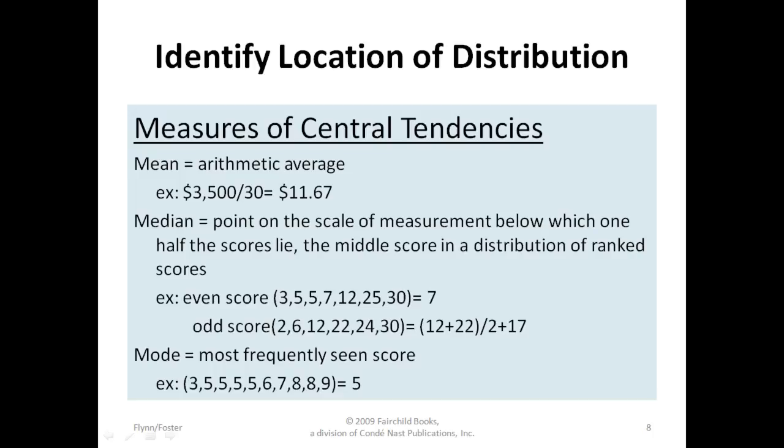The last measure of central tendency is the mode. The mode is your most frequently seen score. An example would be if you look at all of the scores, the most frequently seen score is five. Mode is not used often because sometimes you can have more than one mode, and if your population is small, you may not have enough scores to really make a mode.